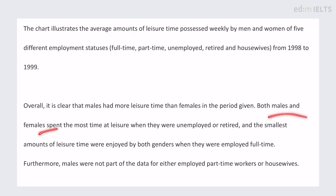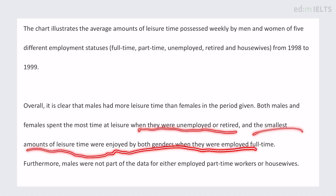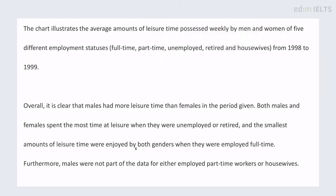'Both males and females spent the most time at leisure' — this is definitely a rewrite because that is language I would use. 'Spend time at leisure' means available, not working or studying, when they were unemployed or retired. 'And the smallest amounts of leisure time were enjoyed by both genders when they were employed full time.' I could argue maybe 'people of both genders' would be slightly better, but it's pretty much okay.